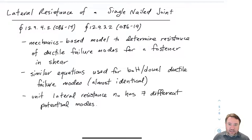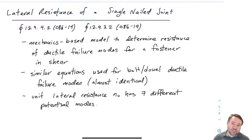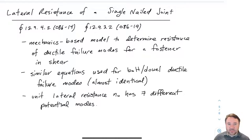We're going to describe exactly what that looks like. It basically operates on the basis of checking a whole bunch of different potential failure modes. Which one governs will depend on the relative strengths and sizes of the pieces of wood in the connection, steel plates, size of steel plates, and the relative strength of the dowel — like the nail or bolt — in that connection.